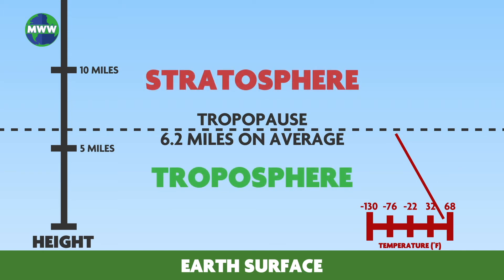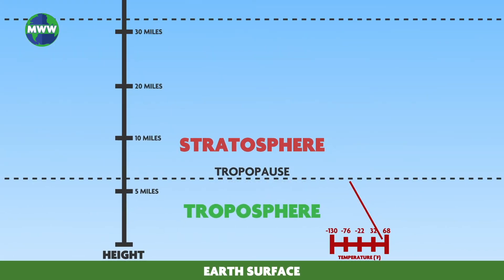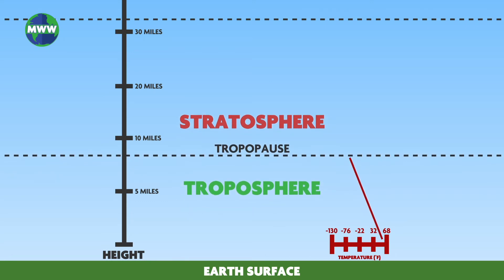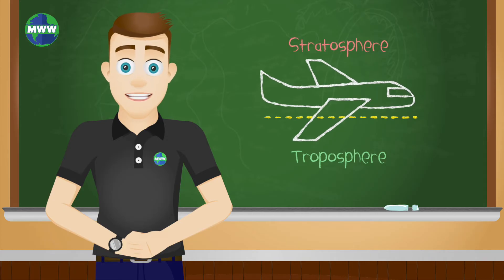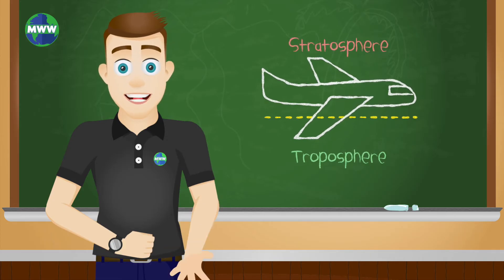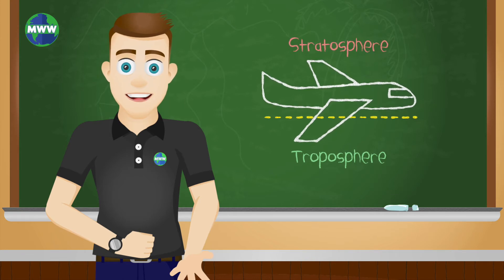The stratosphere is the layer of the atmosphere directly above the troposphere, extending about 31 miles above the earth's surface. The bottom of the stratosphere varies depending on the season and latitude. This layer contains 19 percent of the atmospheric gases but very little water vapor, so few clouds are found here. Airplanes usually fly at the lower level of the stratosphere to reduce turbulence and increase visibility.